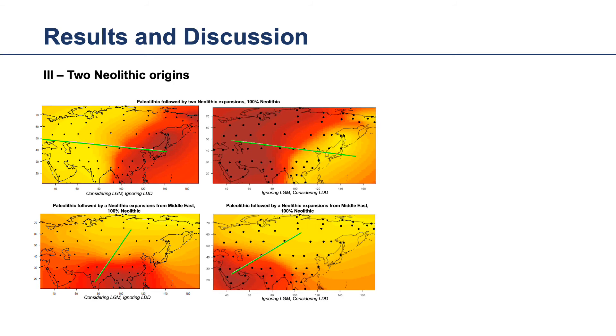Interestingly, our results showed that a factor that was more determining on the orientation of the genetic gradient is the number of Neolithic expansions. When two Neolithic expansions are considered, the genetic gradient has an east-west orientation. However, when only one Neolithic expansion is considered, the genetic gradient has a northeast-southwest orientation.